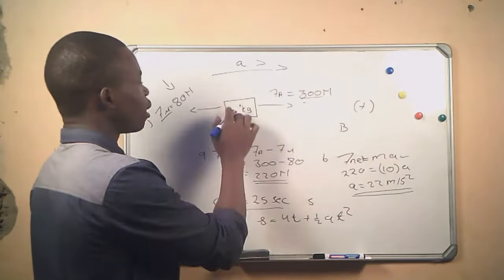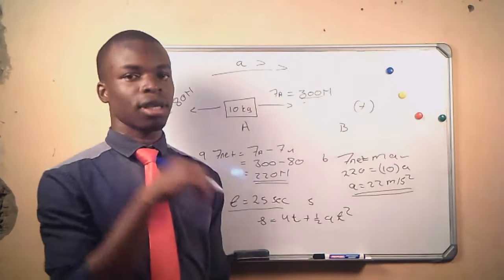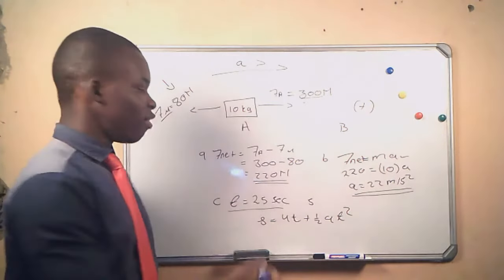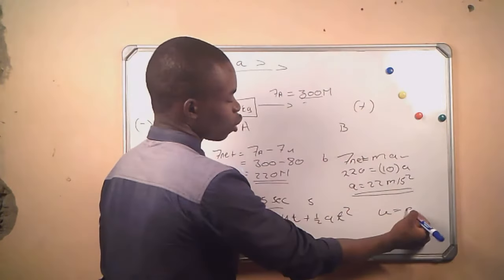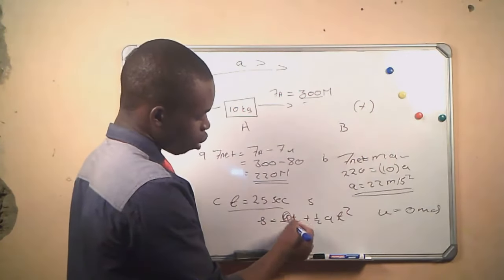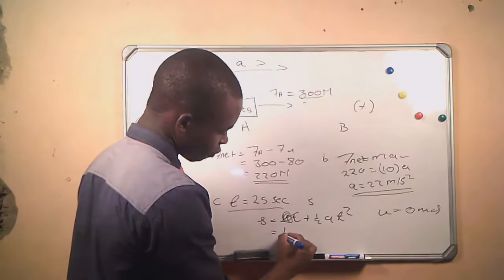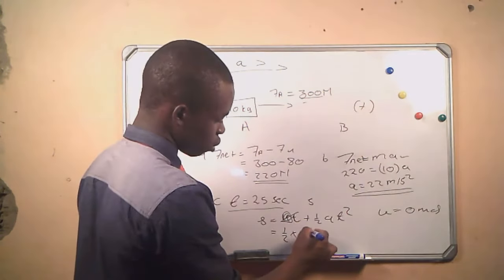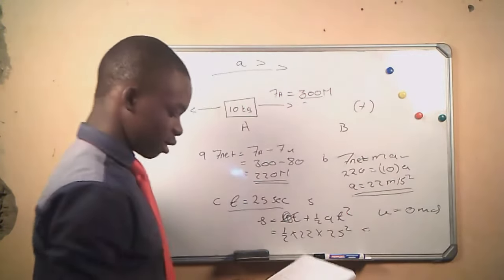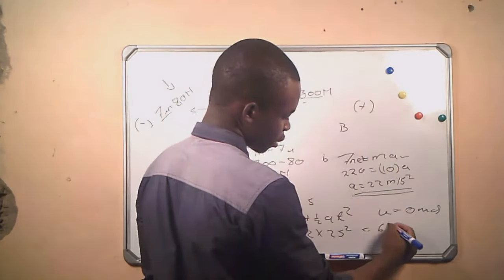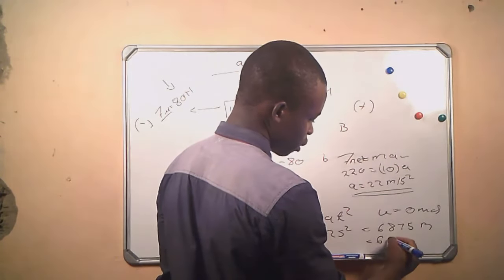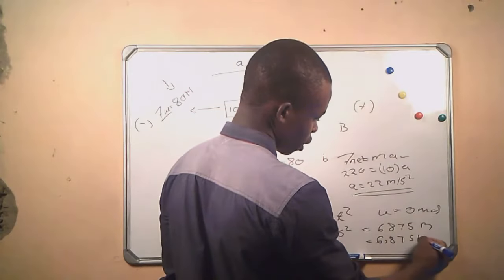Since we are not given the initial velocity of the object, we take it as if the object was accelerated from rest. Therefore its initial velocity u is zero meters per second, and since u is zero, the ut term falls off. We are left with S equals half times 22 times 25 squared, giving us a distance of 6875 meters, which can be written as 6.875 kilometers.